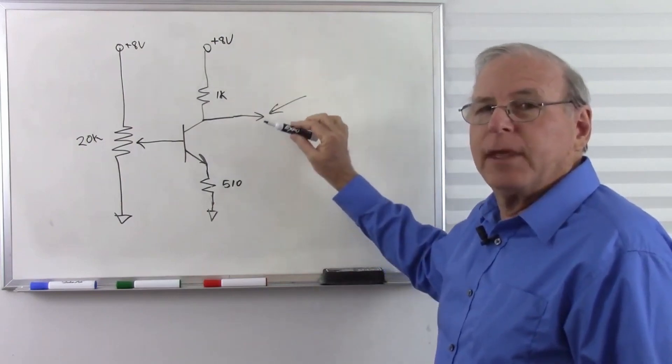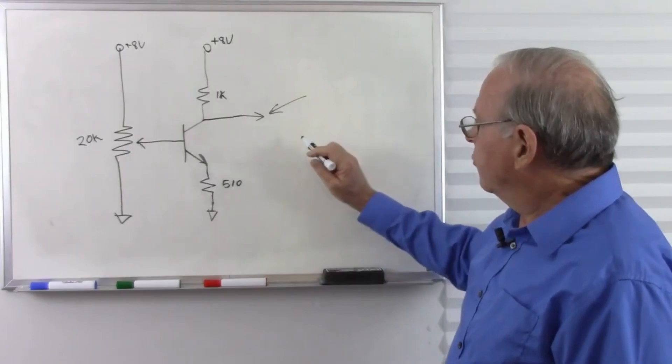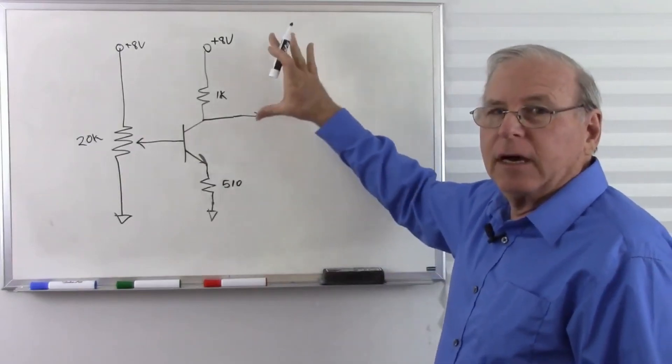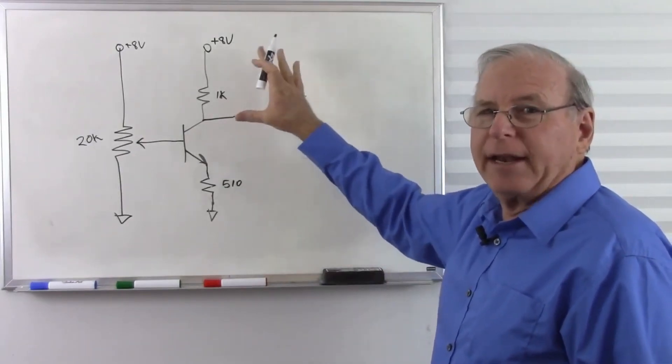And if we hit those limits we get clipping distortion, so we don't want our sine wave flattened out at the top or the bottom.